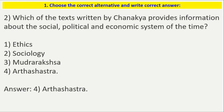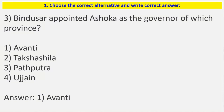Next question: which of the texts written by Chanakya provides information about the social, political, and economic system of the time? The options include Arthashastra, and the correct answer is Arthashastra.